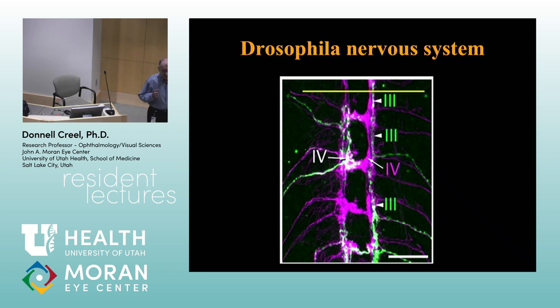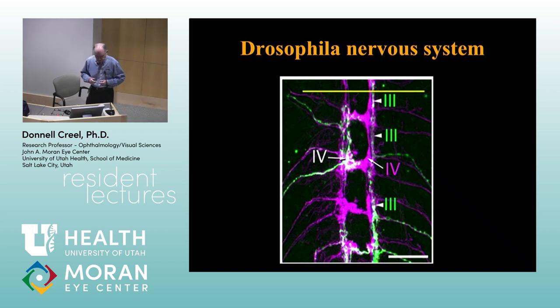Even in the most primitive nervous systems there's usually both ipsilateral and contralateral projections. This is part of the nervous system of a fruit fly — they have a ladder-like system with integration of both sides. So throughout, from the earliest creatures, Drosophila, that preceded mammals by a couple of hundred million years, you have an attempt for organization on both sides.